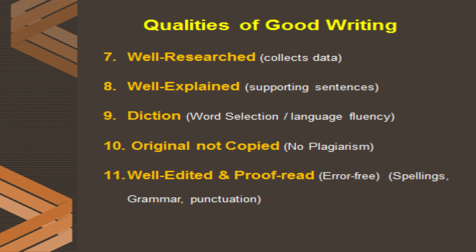Number ten: original — not copied, no plagiarism. Good writing is never copied, never borrowed from others without acknowledgment. If there is some borrowing as a reference, it should be mentioned. Number eleven — the final point: well edited and proofread, which means a good writing is error-free — no spelling errors, no grammatical errors, and no punctuation errors. I hope my 11 points about the qualities or traits of good writing have explained the topic very well.